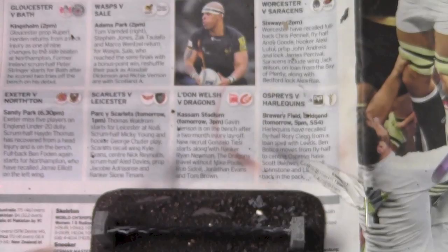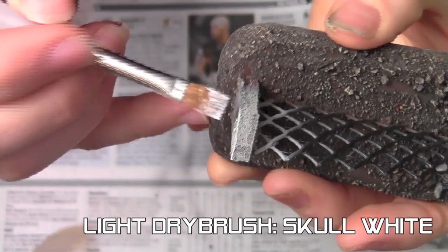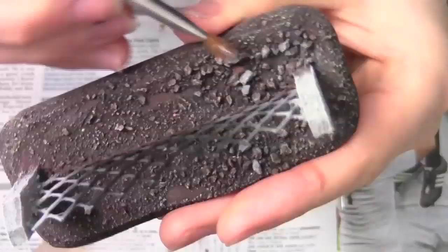The last colour to be used is Skull white. This is going to be dry brushed on the fence post as well as the stones on the base. To tidy up the overspray on the fence just use black paint.